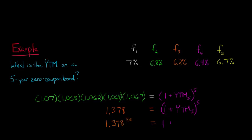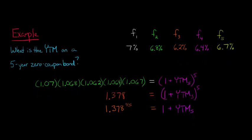So then we're going to be left with 1 plus the yield for that fifth year for the zero coupon bond, which is what we're trying to calculate.